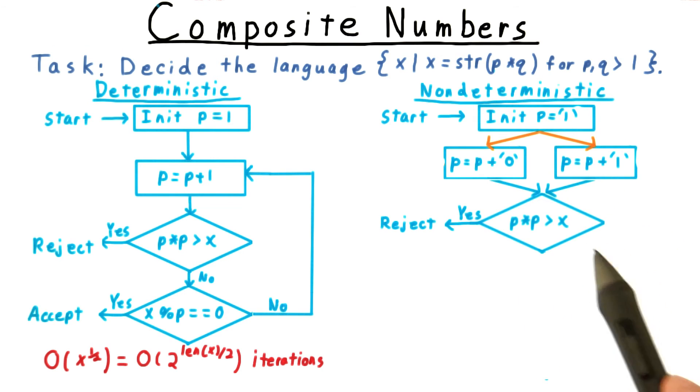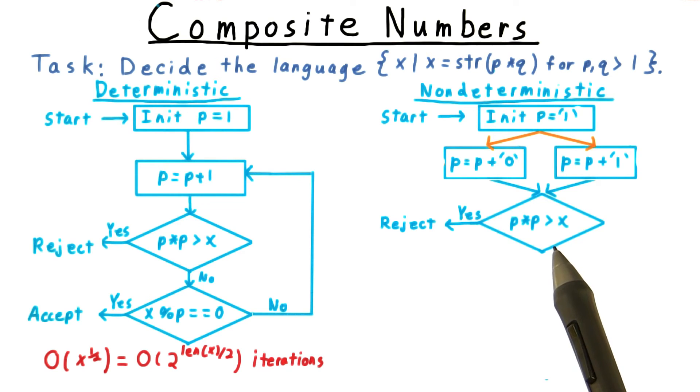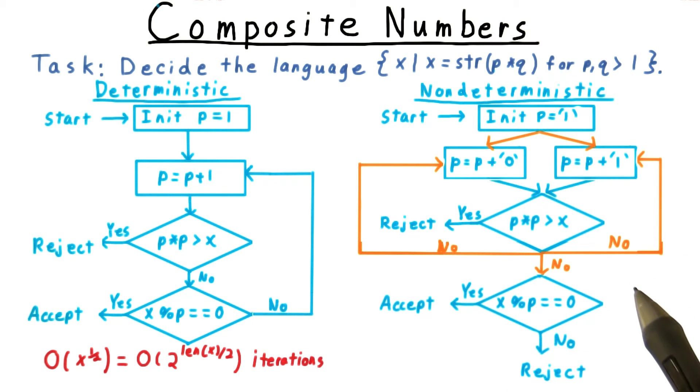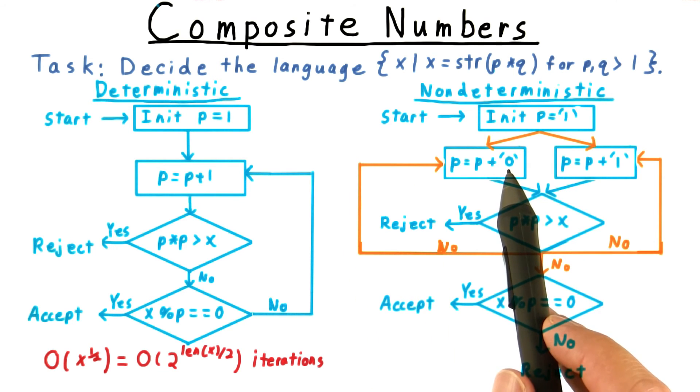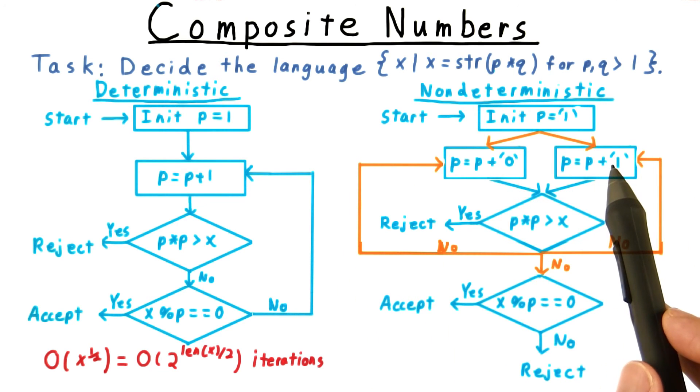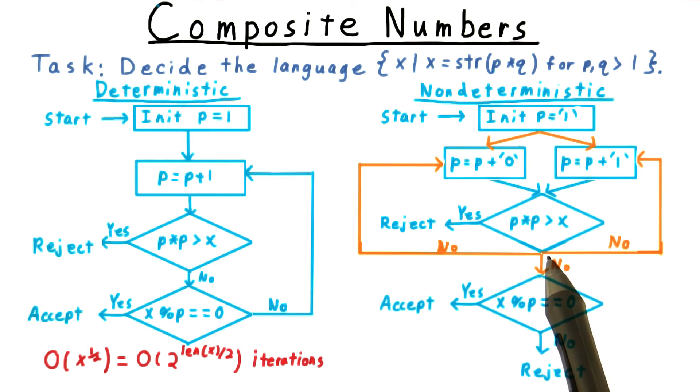Next, we check to see if we've made p too large. If we did, then there's no point in continuing, so we reject. On the other hand, if p is not too big, then we nondeterministically decide either to append a 0 to p, append a 1 to p, or to leave p as it is and go see if it divides x.